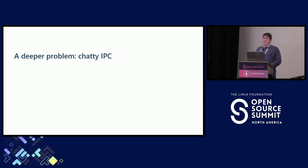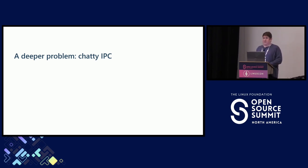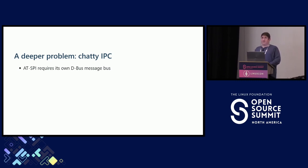In my opinion, there is a deeper problem with ATSPI — what I will call the problem of chatty IPC or inter-process communication. In order for a screen reader or other assistive technology to respond to an application event or a user command, it doesn't immediately have all of the information that it needs locally. It has to keep going back and forth doing multiple IPC round trips to query all of the information that it needs. It's bad enough that ATSPI actually has its own instance of the D-Bus message bus, because if all of that IPC was happening on the D-Bus session bus, it would degrade performance for all of the other things in the desktop environment.